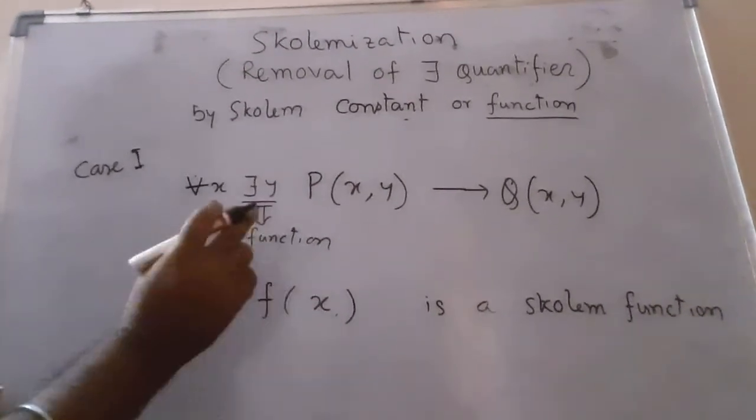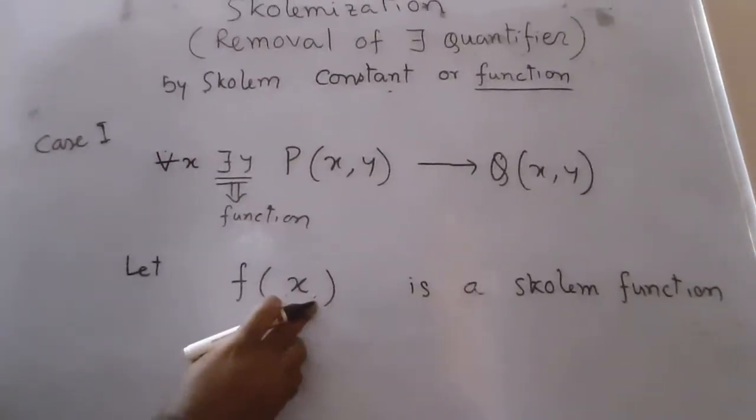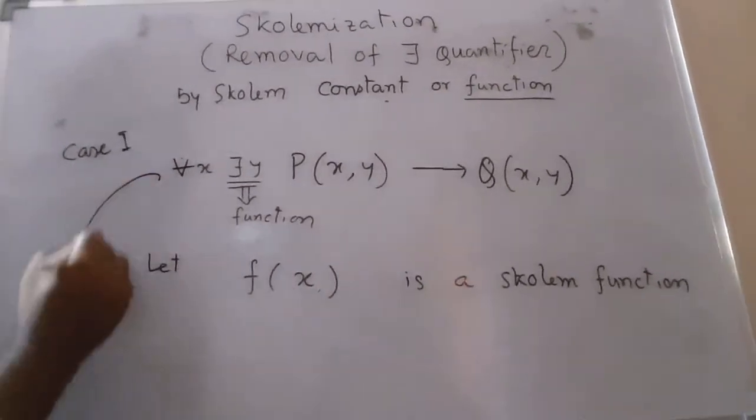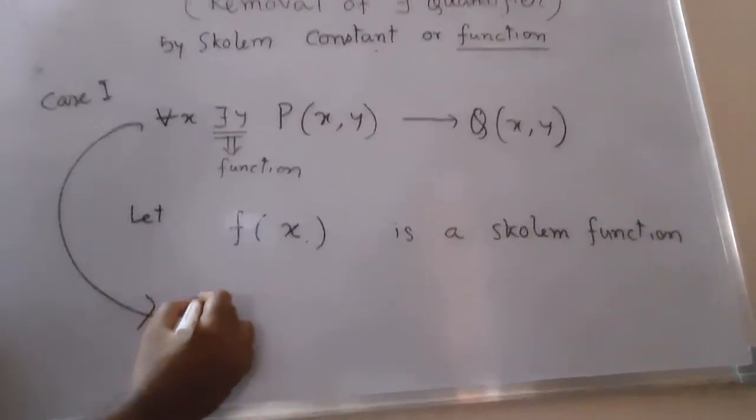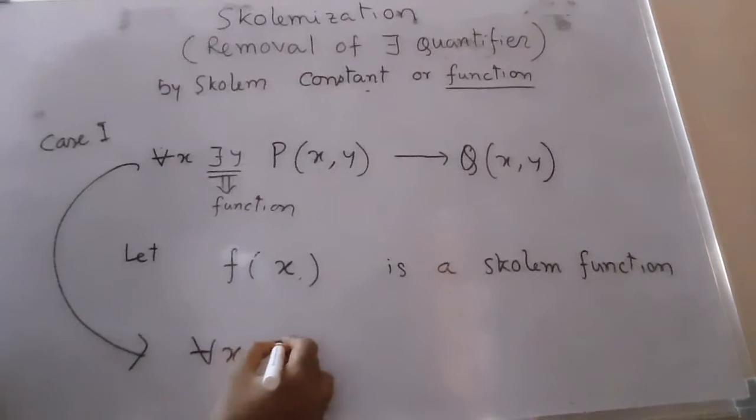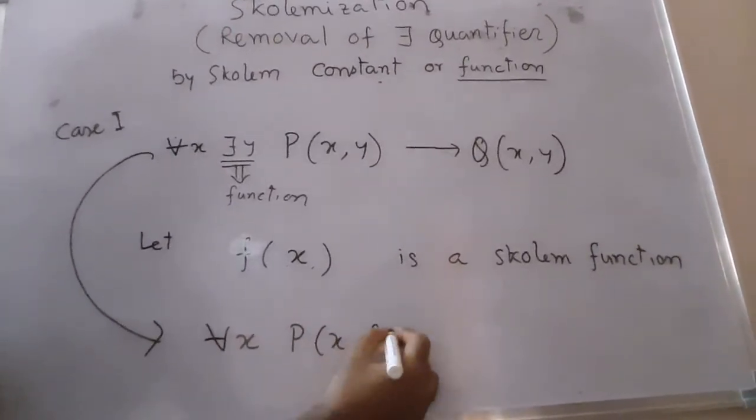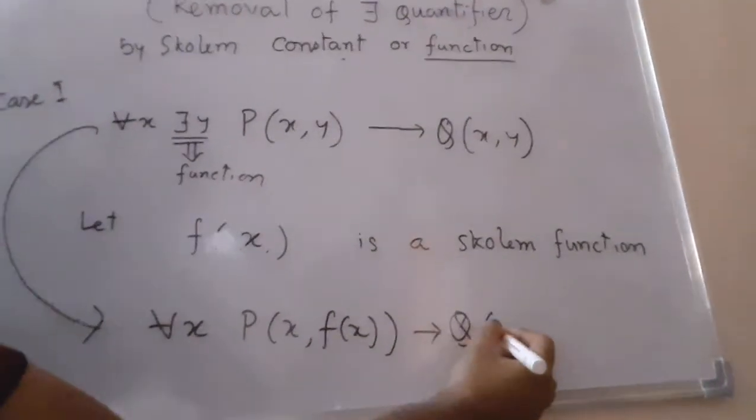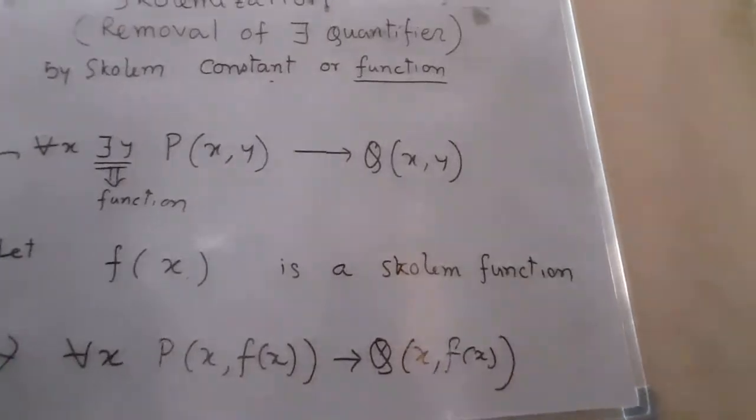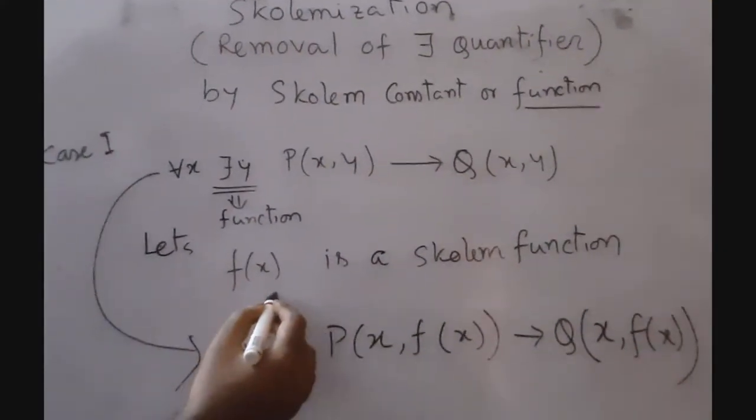So whenever we get y, we will replace y by the Skolem function f(x). After applying Skolemization, this relation will look like: for all x, P(x, f(x)) implies Q(x, f(x)). Here we have removed the existential quantifier by using a Skolem function.